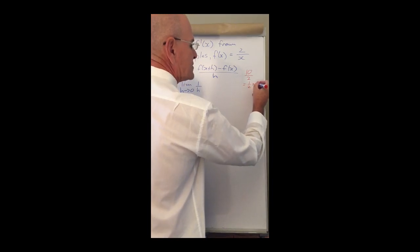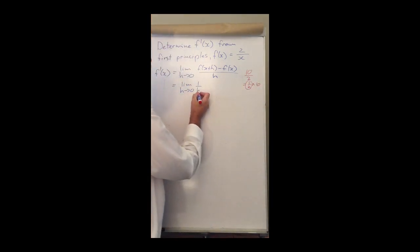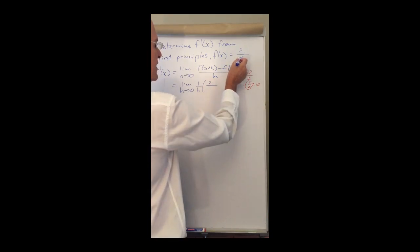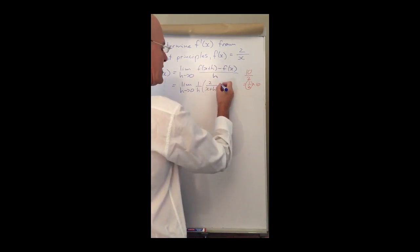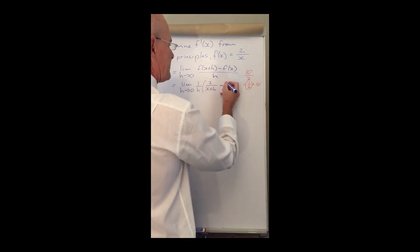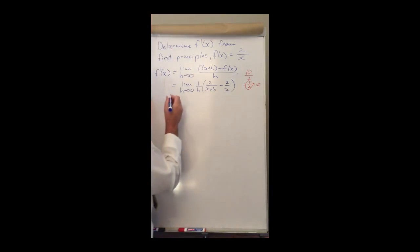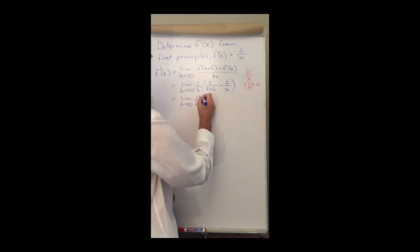So let's continue. f(x+h) then is 2 over, instead of x I have x+h, minus f(x) straightforward 2 over x. Let's continue, so it's the limit where h approaches 0 of 1 over h.